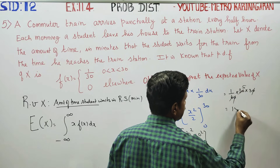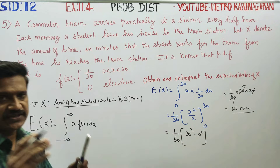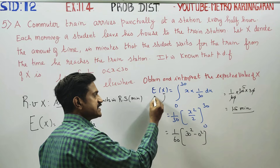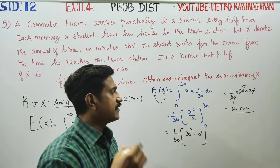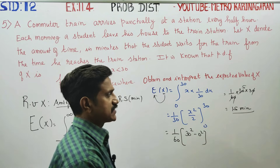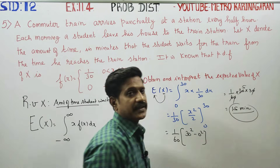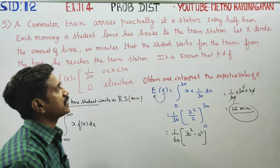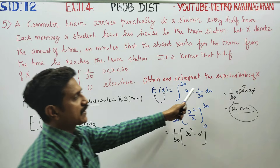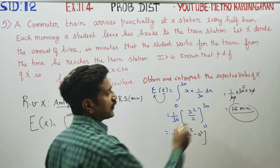Five threes are fifteen minutes. This is the expected time. The expectation of X, where X is the waiting time, tells us what time is expected to wait for every train at the railway station. Fifteen minutes is the expected wait time for every train. We have found the expectation.